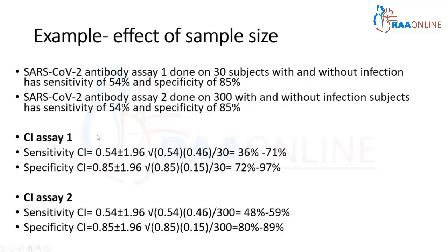This is an example to show how sample size can impact confidence intervals. We have taken two SARS-CoV-2 antibody assays, both with 54% sensitivity and 85% specificity. The first assay is done on 30 subjects — 30 subjects with disease and without disease — whereas the second assay is done on 300 subjects with disease and without disease.